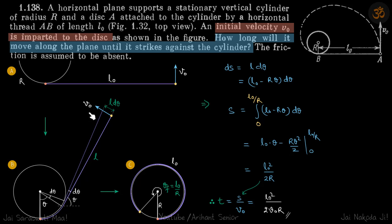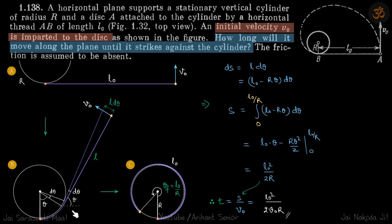In a small time, let's say the thread moves further by an angle dθ. By geometry, since these are the tangents, if this angle is theta then this angle is also theta. And if it further wraps by angle dθ, then this angle is also dθ, because this is the new tangent — so the total angle is theta plus dθ.